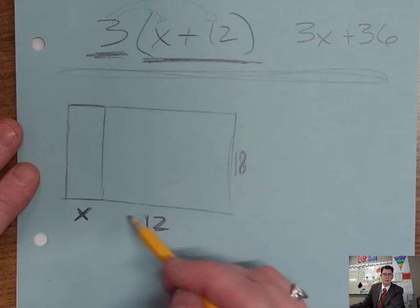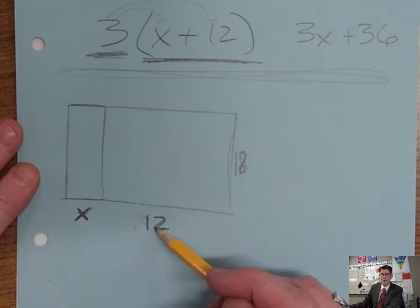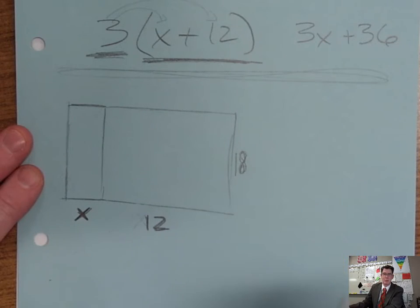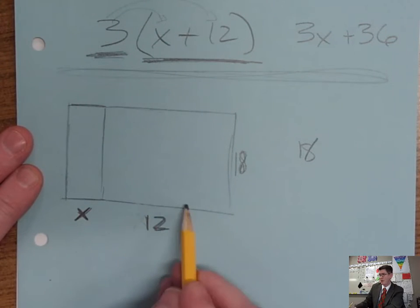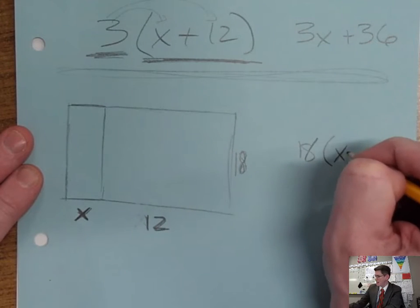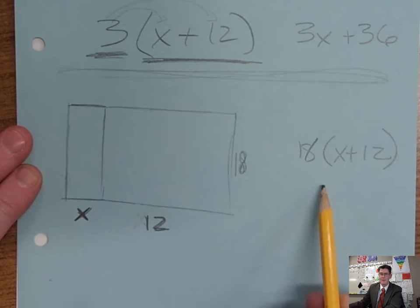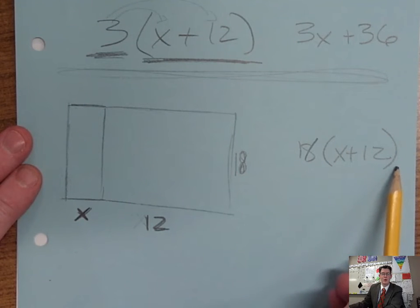Well, it's length times width. Before it was 18 times 12. But now it's going to be 18 times this whole thing right here, x plus 12. So that's the new area.